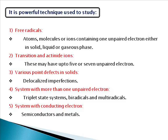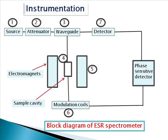Now we will discuss the instrumentation of ESR spectroscopy. This is a block diagram of ESR spectroscopy showing the most important components with their numbers. The components are: first, the source; second, the attenuator; third, the waveguide; fourth, the sample cavity; fifth, electromagnets; sixth, the detector; and seventh, modulation coils and phase-sensitive detector.